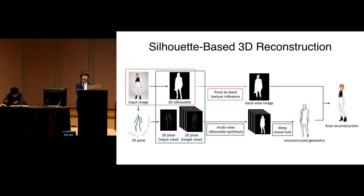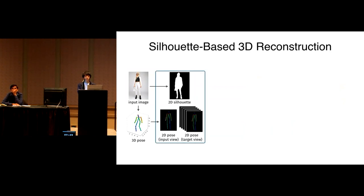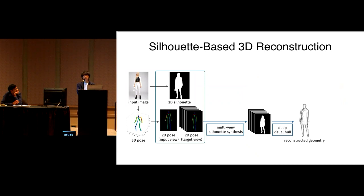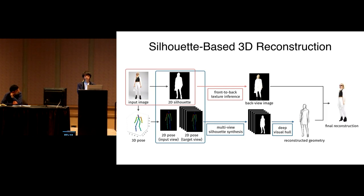Given an input image, we first extract the 2D silhouette and 3D joint locations, then create 2D joint images from the input view and target views. These are fed into a silhouette synthesis network to generate plausible 2D silhouettes from novel viewpoints. From synthesized silhouettes, we apply a deep learning-based visual hull algorithm to incorporate shape priors. For texture, we infer the back view of the subject and stitch front and back views together to get the fully textured 3D clothed human.